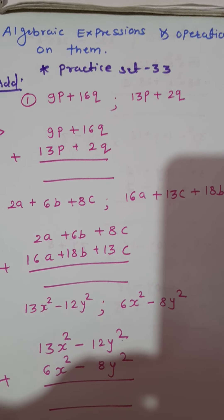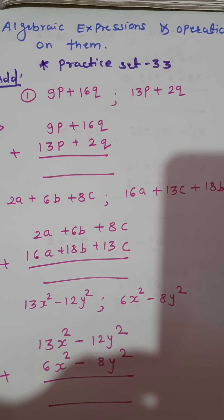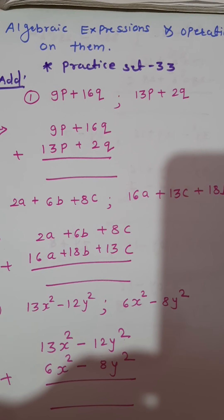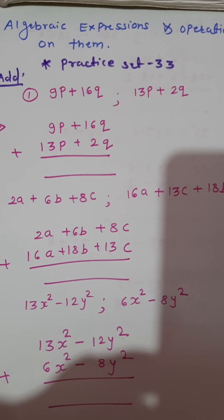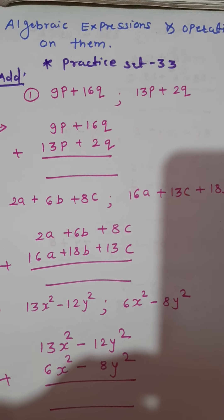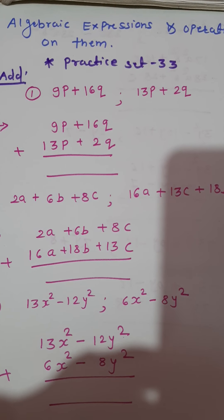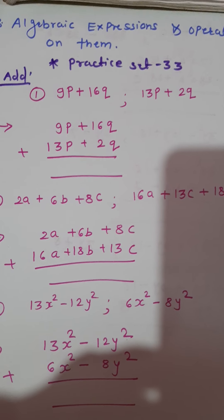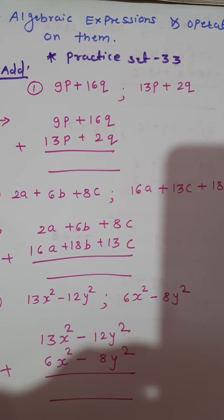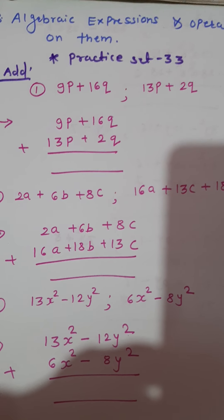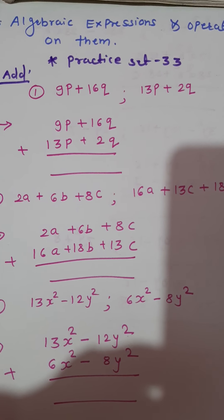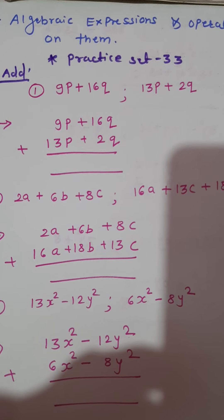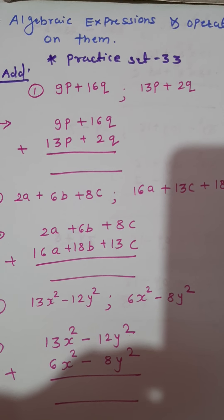You have learnt what is meant by like terms and unlike terms. We can add or subtract only like terms. After that, we have seen types of algebraic expressions: monomial — single term; binomial — two terms; trinomial — three terms; and polynomial means more than three terms.